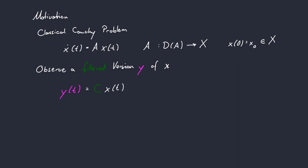In addition to our state x, which comes as a solution of our Cauchy problem, assume that we do not have access to x directly, but only to a filtered version of x, which we will call y.